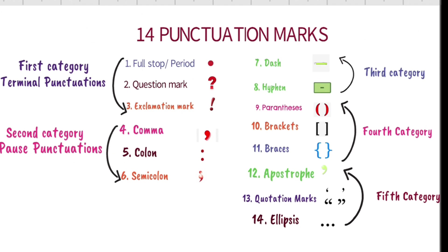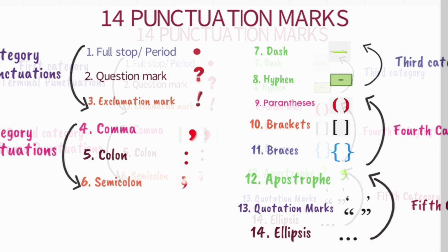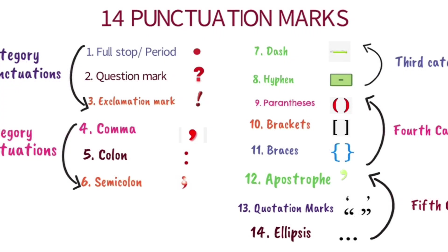So in this way, these 14 principal punctuation marks in English language, they have been divided into five categories on the basis of their functions, their uses and sometimes for their appearances. I hope with this introduction, they will retain in your memory for longer.